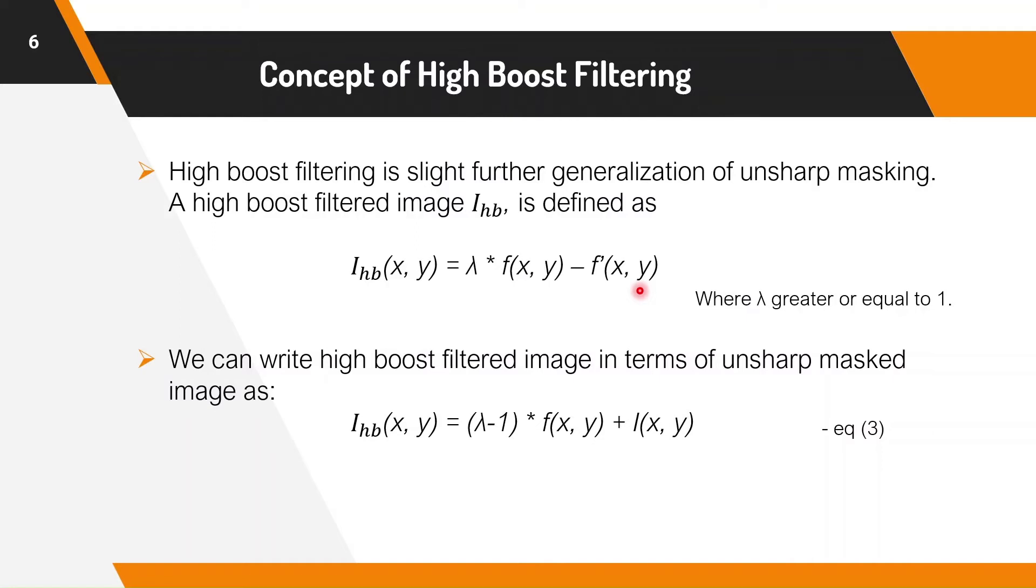We have high boost filtered image in terms of unsharp masked image as i_hb(x, y) equals (lambda minus 1) times f(x, y) plus i(x, y).